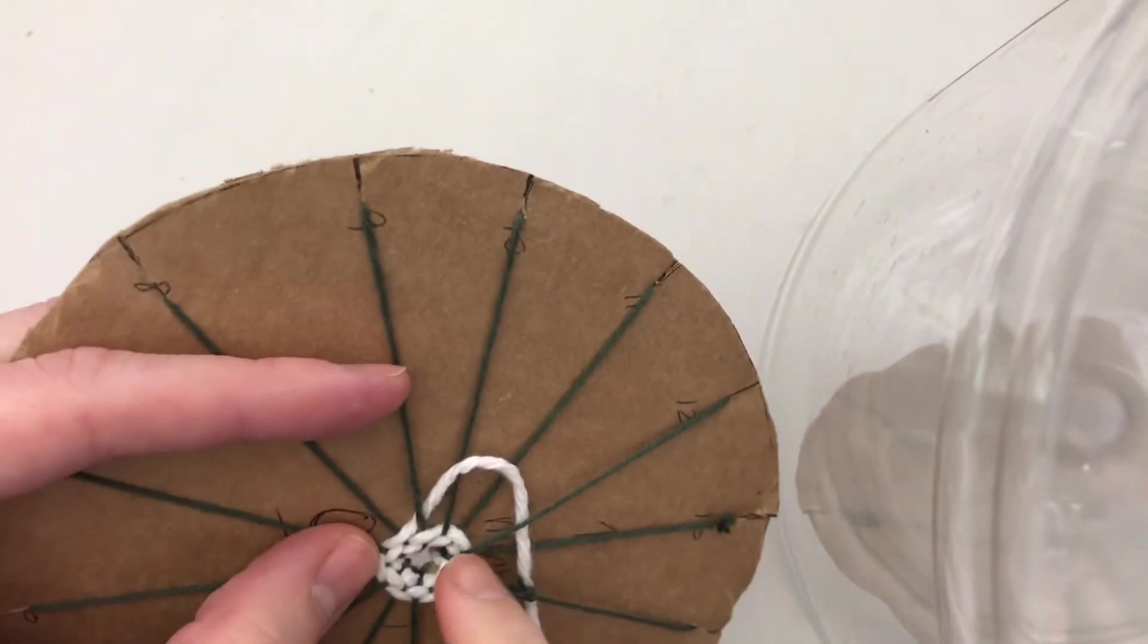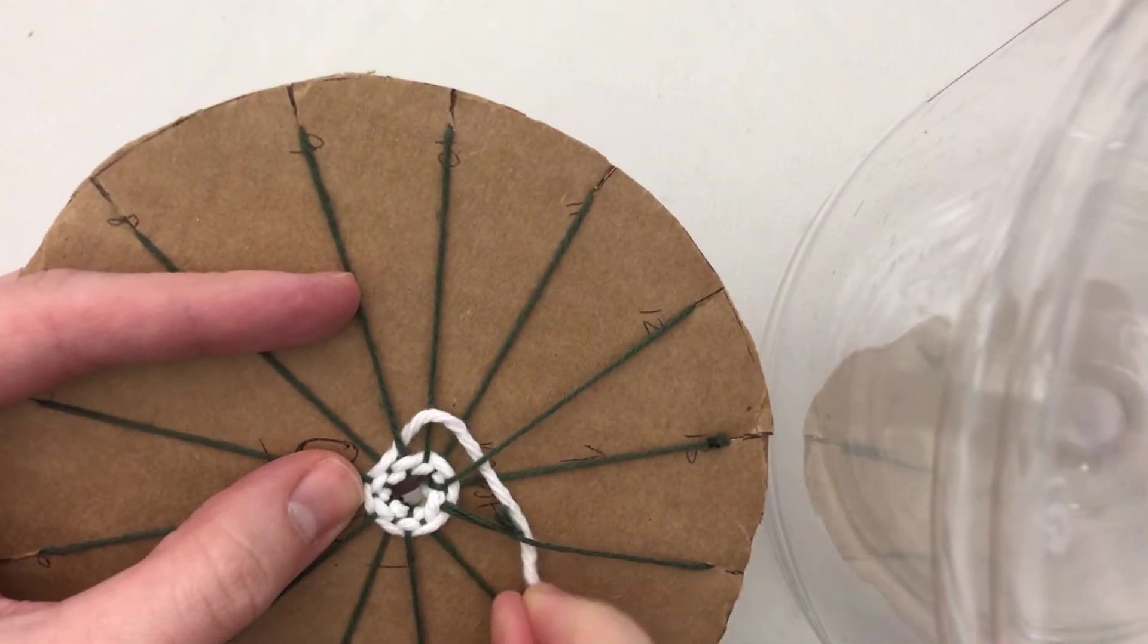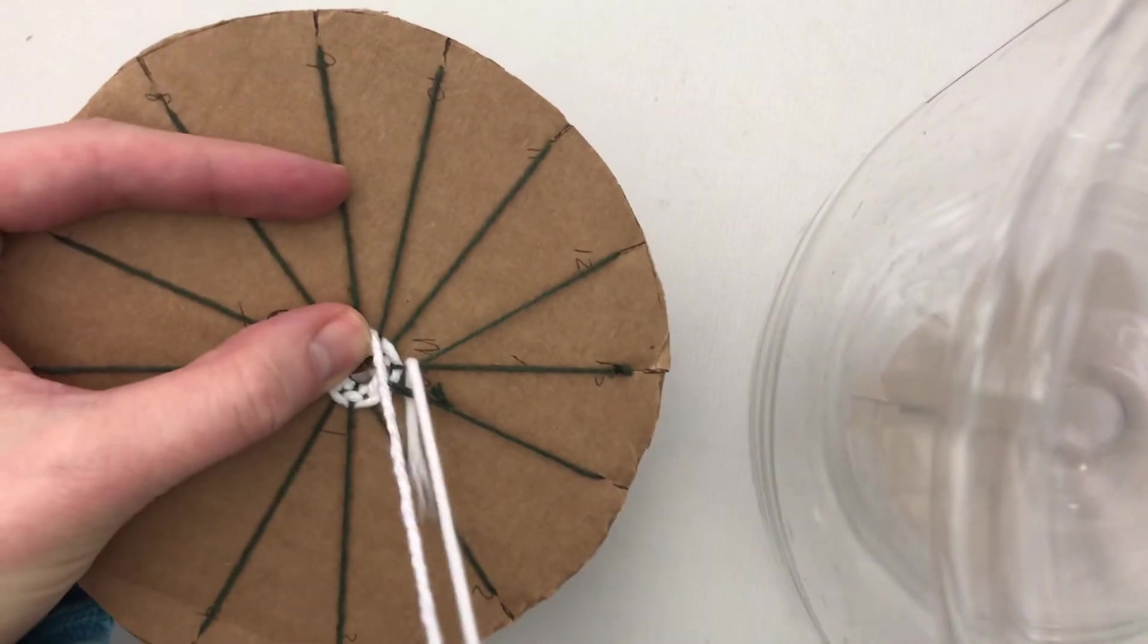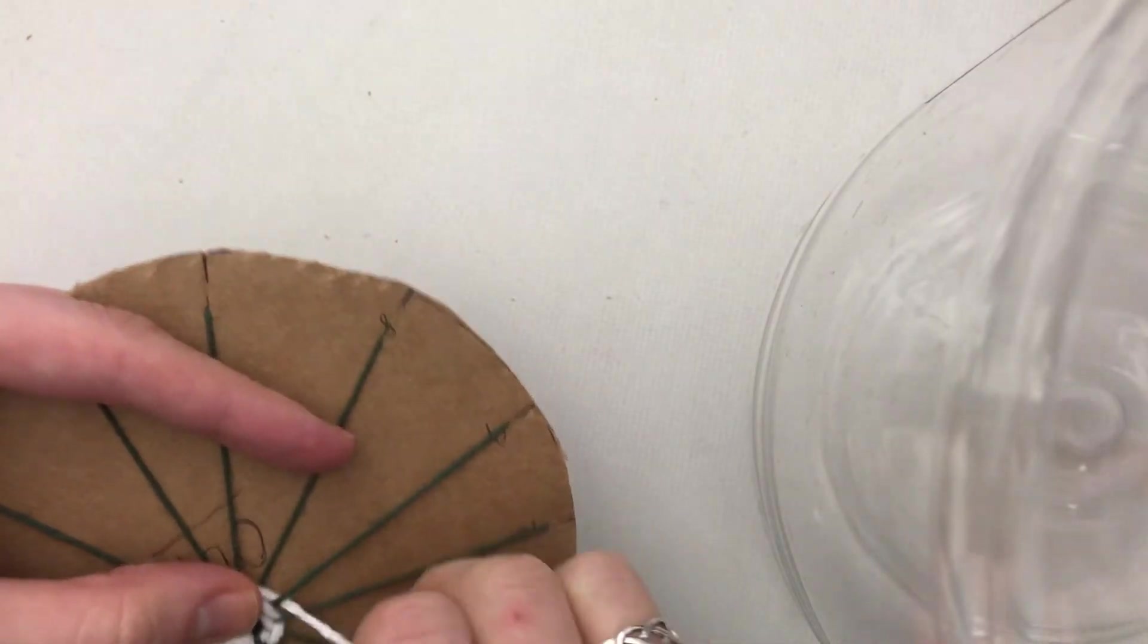So I double checked and I went back and I noticed that it went over number ten and eleven. So that just means I need to back up, pull my string back out, and make sure to go under eleven instead of skipping it.